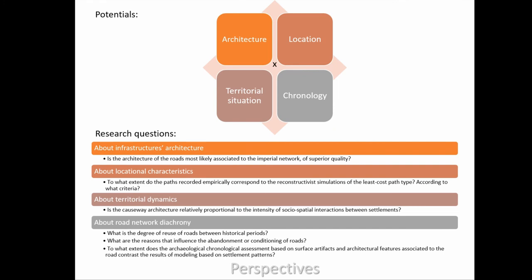To conclude, I would like to highlight the potential of this research design. First, because it is based on four distinct lines of evidence: the architecture, the location, the territorial situation, and chronology. Their combination allows addressing a diversity of research questions about historical processes and related territorial dynamics in our study region. But also and finally, because it is based on an empirical record, while archaeological insights into road networks' historical problematics are more commonly addressed through reconstructivist approaches. This empirical record could also be of interest beyond archaeology, because it has the potential to address fundamental research questions about mobility behaviors and territorial dynamics in changing bioclimatic, socio-political, and technological settings.